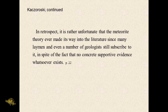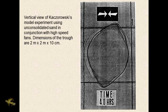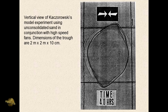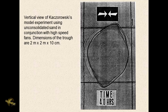Then Coxarowski says it's unfortunate the meteorite theory ever made it into the literature, since many laymen and even a number of geologists still subscribe to it, in spite of the fact that no concrete supportive evidence whatsoever exists. His model experiment used unconsolidated sand in a 2-meter by 2-meter by 10-centimeter trough with high-speed fans. He took the tray of sand, scooped out a hollow by hand, then blew a high-speed fan across it - and produced a shape that to me looks more like a football than a Carolina Bay. And by scooping out the hollow by hand, he actually disproved his own theory.